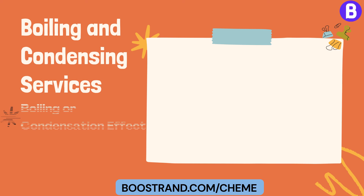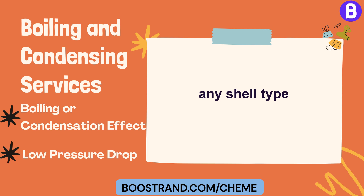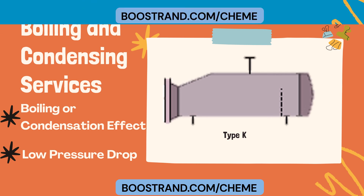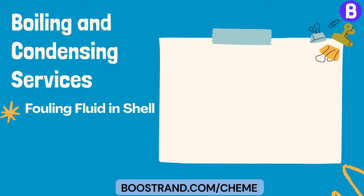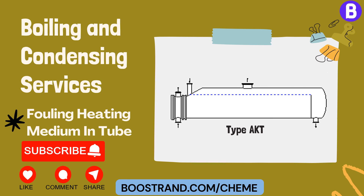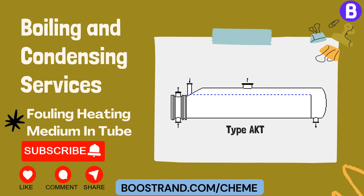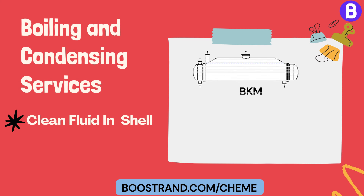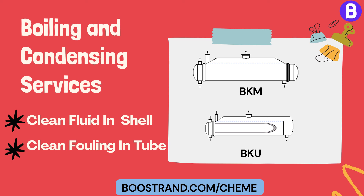For exchangers that exhibit a boiling or condensation effect, we can use any shell type. However, if these exchangers require a very small pressure drop, we can use a kettle type K, such as the case for a kettle reboiler. If we are dealing with a fouling fluid in the shell and a clean fluid in the tube — as is the case for steam reboilers — we can use AKU type. If the heating medium in the tube is fouling, AKT type can be used. If the fluid in the shell is clean, we can use BKM type. If this is accompanied by a clean fluid in the tube, the Temer type shall be BKU.